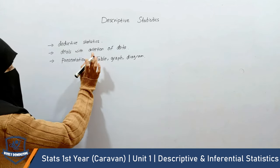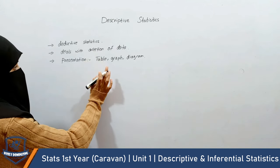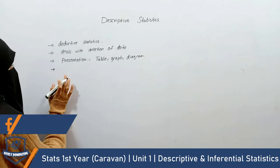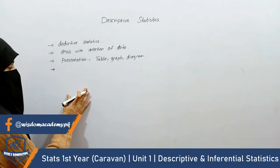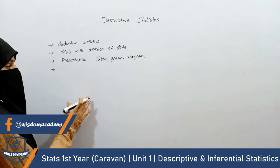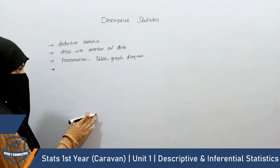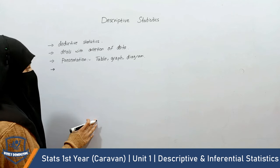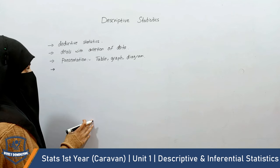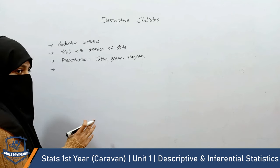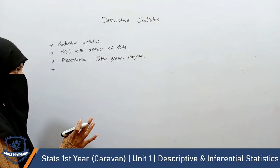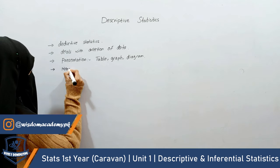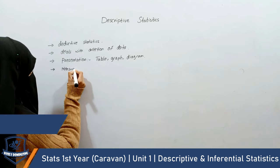First is data collection. Second is to represent it. Third is to measure. If you have to measure something — mean, median, mode — then we can measure it in the form of data.